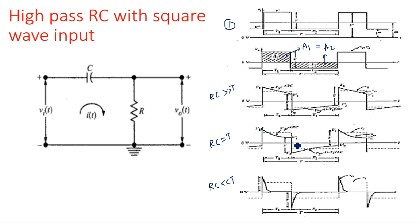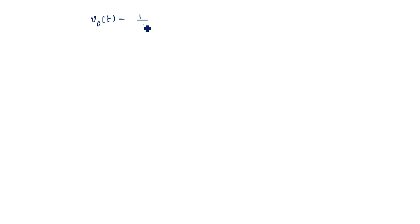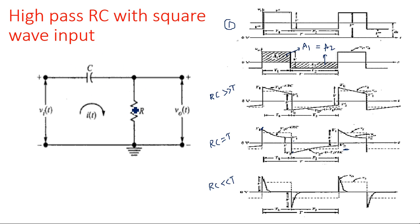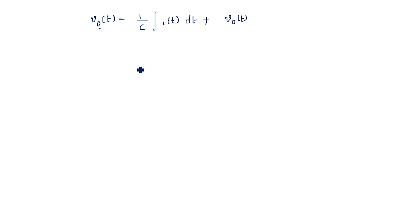Assume four instances: V1, V1-dash, V2, and V2-dash, to calculate the output voltage equation. The output voltage V0(t) equals 1/C times the integral of i(t) dt. Taking the loop equation, Vi(t) equals this voltage plus the output voltage, where the capacitor voltage is 1/C times the integral of i dt. Since i(t) can be written as V0/R, this gives Vi(t) = (1/RC) integral of V0(t) dt plus V0(t).